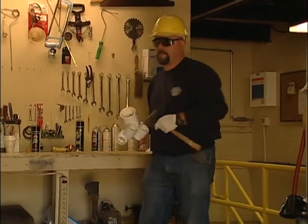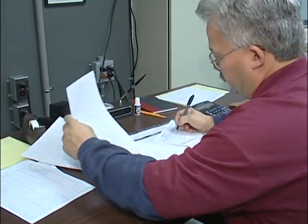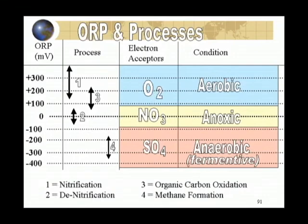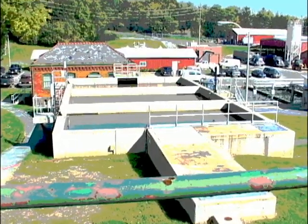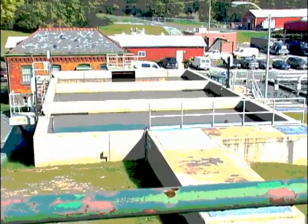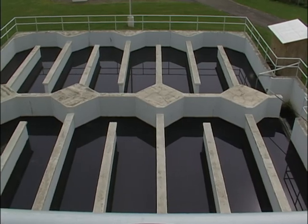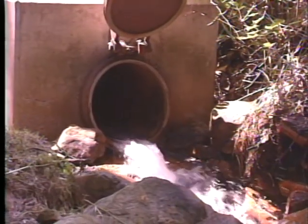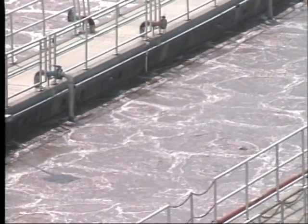System operators need to maintain all of the factors that impact denitrification. Process control testing and good record keeping are a must. The use of an oxidation reduction potential probe can be quite useful in determining the effectiveness of your treatment process. Proper monitoring and process control of upstream treatment units is essential. If there is a failure in the denitrification process, partial denitrification could take place and lead to the production of nitrite, which can cause the demand for chlorine to increase dramatically. Many facilities will also have total phosphorus limits.